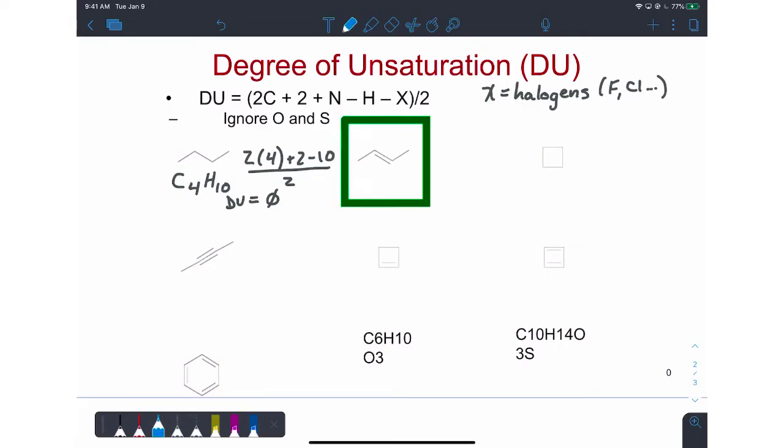If we look at 2-butene, C4H8, it has fewer number of hydrogen atoms. So it is unsaturated. We can calculate that it has one degree of unsaturation, which corresponds to the one double bond.